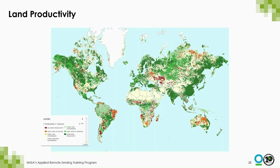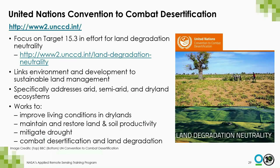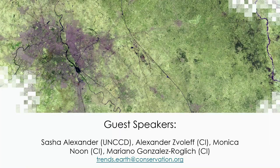I just wanted to mention some of these datasets to get everyone thinking about them from the start. To assist with the objectives of Target 15.3, the UNCCD is directed to address arid, semi-arid, and dry land ecosystems. The UNCCD is the sole legally binding international agreement linking environment and development to sustainable land management. Sasha will speak in much more detail about the UNCCD and their reporting requirements.